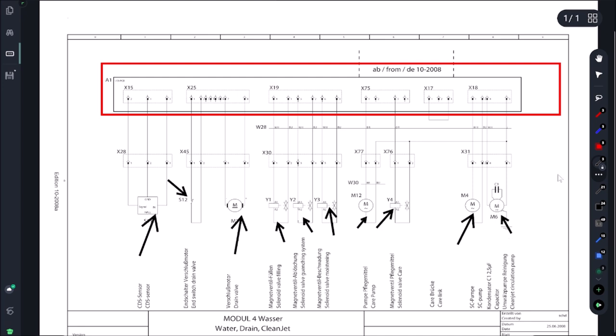I'm just going to go to the usual suspects - the solenoids and this pump here and these two pumps. So the clean jet pump as well as the SC pump, which is your emptying pump. I'm going to disconnect all these, we're going to isolate and plug things in one at a time until we find out what's popping that fuse.